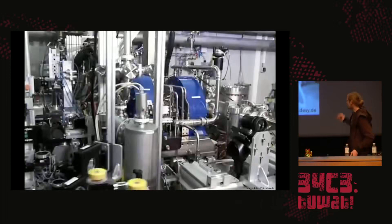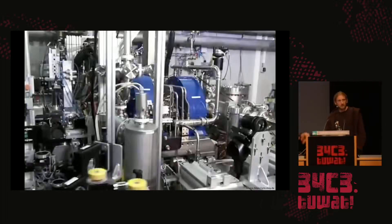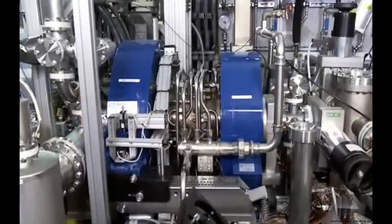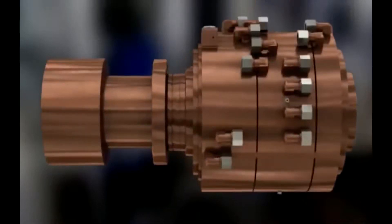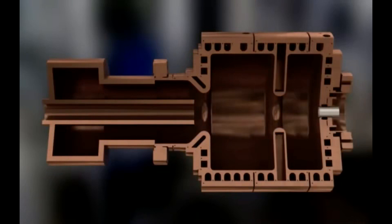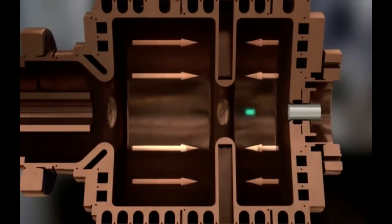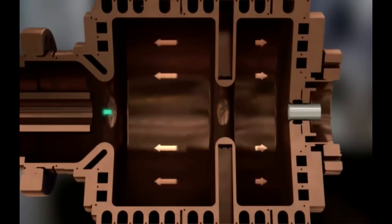The electron source: inside a copper cavity connected to a waveguide, a photocathode is struck by a UV laser pulse, emitting electrons via the photoelectric effect. Each electron bunch contains about 1 to 10 billion electrons. The RF cavity is synchronized so the electrons are accelerated immediately as they are generated.